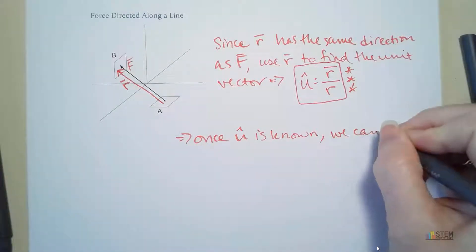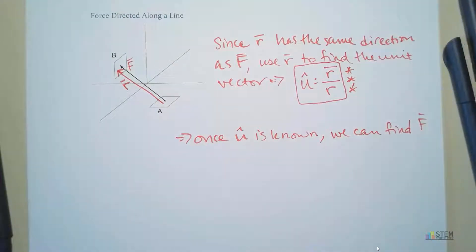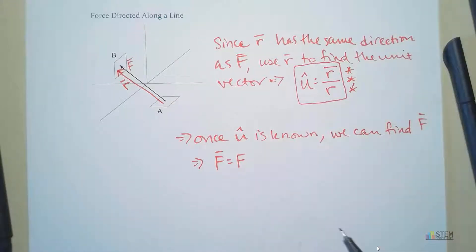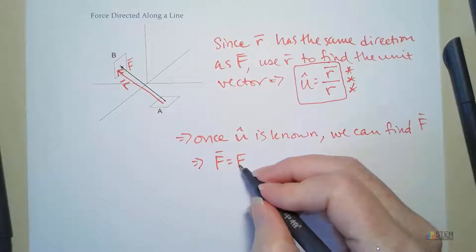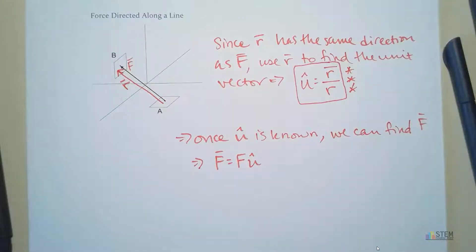then we can find F, or the force vector. And how are we going to do that? Well, the force vector is going to be the magnitude of the force, so we're going to assume we're given the magnitude of the force here. So we'll have the magnitude of the force times the unit vector. And that's what we need.